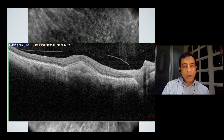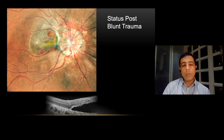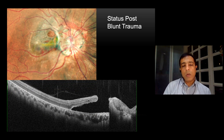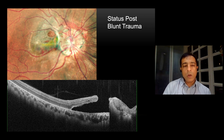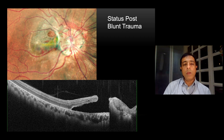A patient who came with blunt trauma — you see Berlin's edema and also a central hole just next to the disc which has formed. If you pass the OCT, it picks up exactly where the hole is: the retina ends temporal to the optic nerve head, and there's another hole below that. Again, multimodal imaging helps you document and explain to the patient — this is the hole you have, this is the extent of the condition, and hence the prognosis can be explained very well.